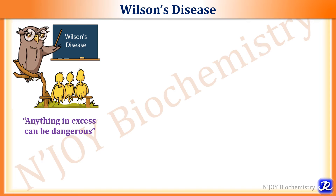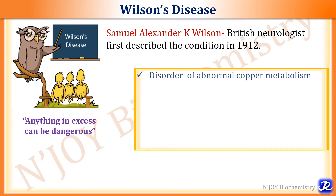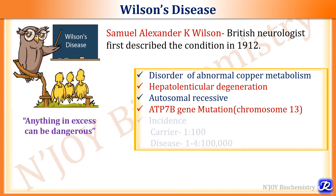Wilson's disease is named after Samuel Alexander K. Wilson, a British neurologist who first described the condition in 1912. It is a disorder of abnormal copper metabolism, also called hepatolenticular degeneration. It is an autosomal recessive condition occurring due to mutation in the ATP7B gene located on chromosome 13. The incidence is 1 to 4 in 100,000.